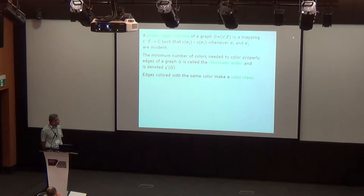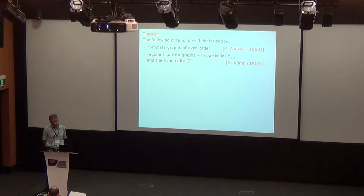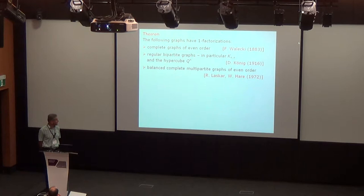What do we know about 1-factorizations for basic classes of graphs? First of all, obviously, complete graphs have 1-factorizations, and also complete bipartite graphs and other classes of regular bipartite graphs, and also complete multipartite graphs of even order.